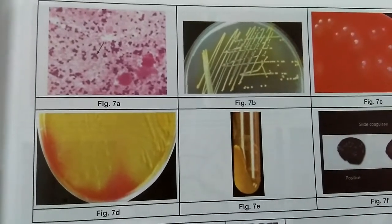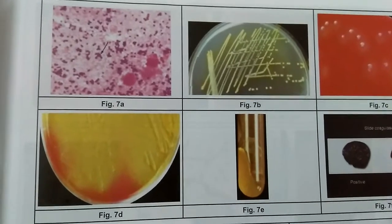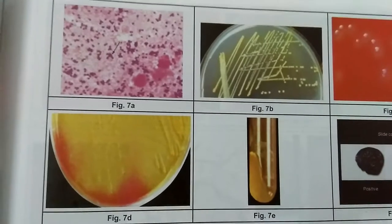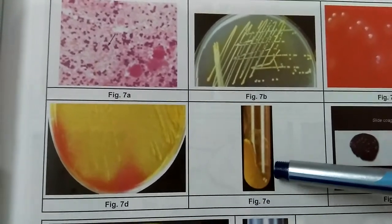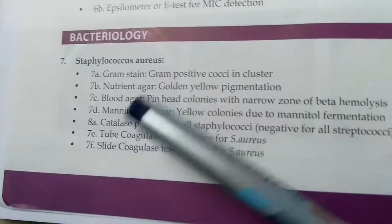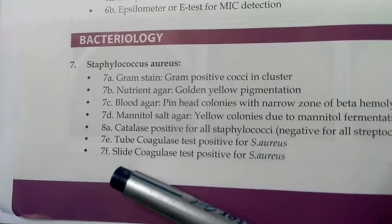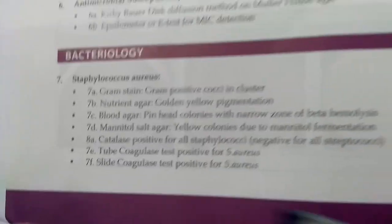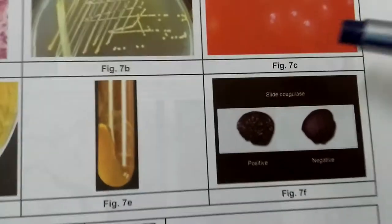Image 7e is the tube coagulase test, which is positive for Staphylococcus aureus — you can see the clot formation. Image 7f is the slide coagulase test, also positive for Staphylococcus aureus. This one is positive and this one is negative.